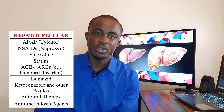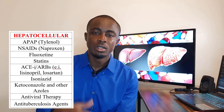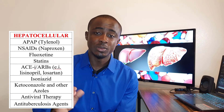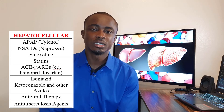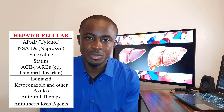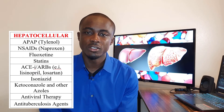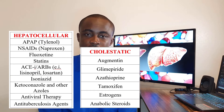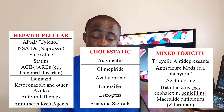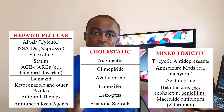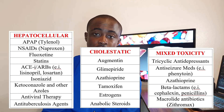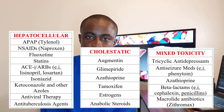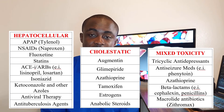Here is the list of drugs shown to cause hepatocellular toxicity: acetaminophen (Tylenol), NSAIDs especially naproxen, antidepressants like fluoxetine, blood pressure medications such as ACE inhibitors and ARBs like lisinopril and losartan, antifungals like ketoconazole, antivirals like abacavir, and antituberculosis medications such as isoniazid and rifampin. There are also drugs known to cause cholestatic liver injury and drugs that cause a mixture of both — including blood pressure medications, statins, estrogen therapy, beta-lactam antibiotics, and anti-seizure medications. For more details, you can find the full list on LiverTox.